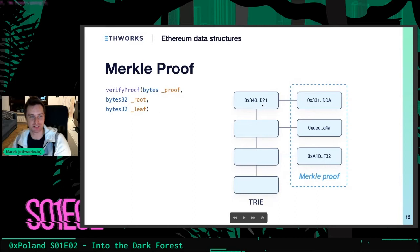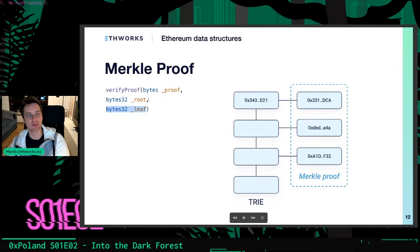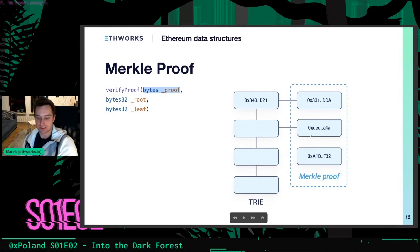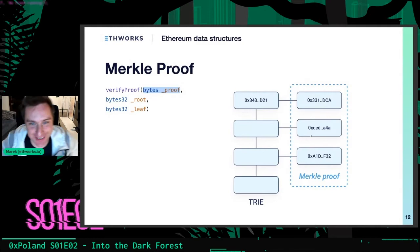We can create a method — in Solidity or any other language — called 'verifyProof.' It takes three arguments: the root that is well-known to us, the leaf that we want to verify belongs to the root, and an array of bytes representing the proof siblings.